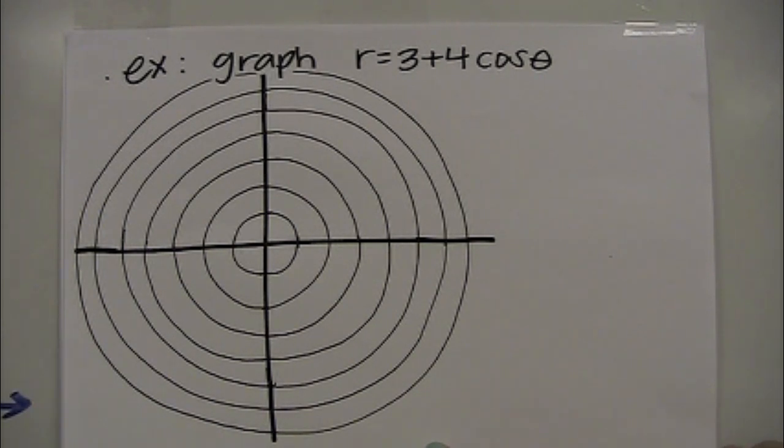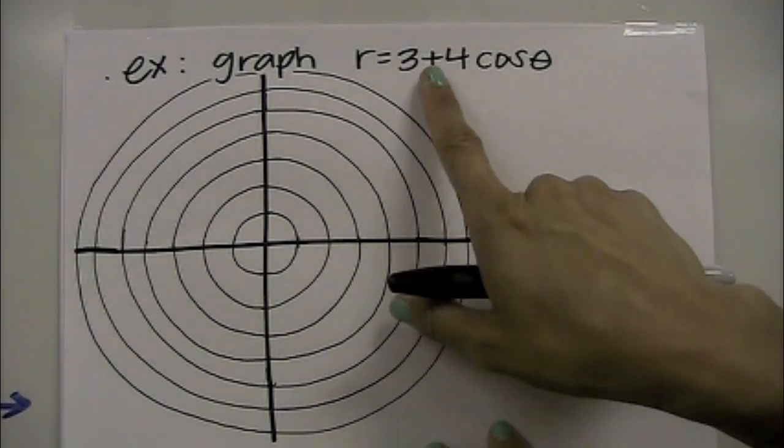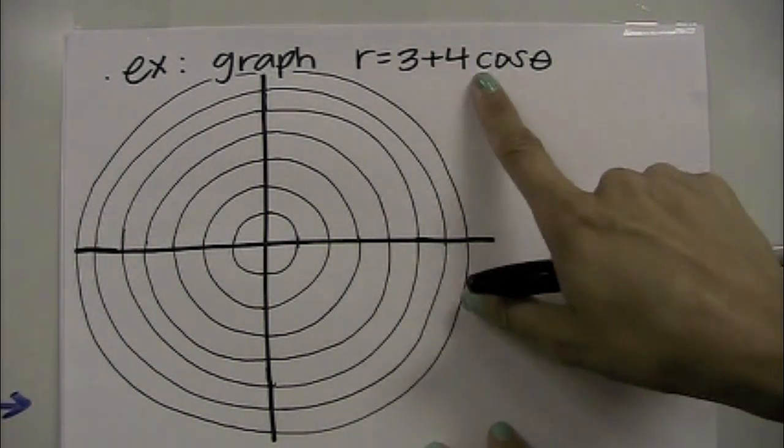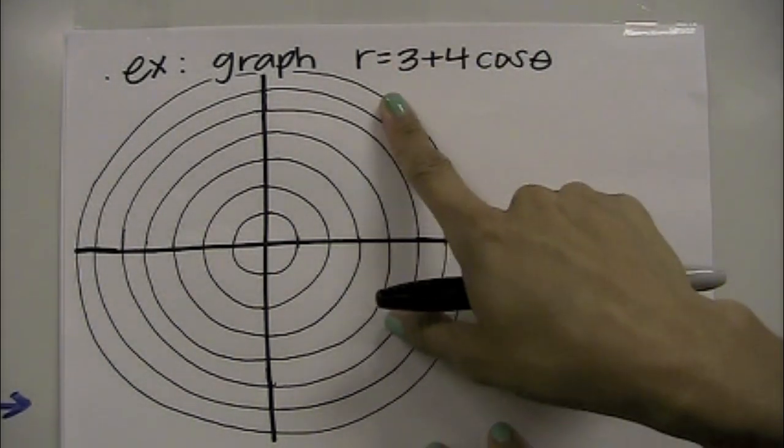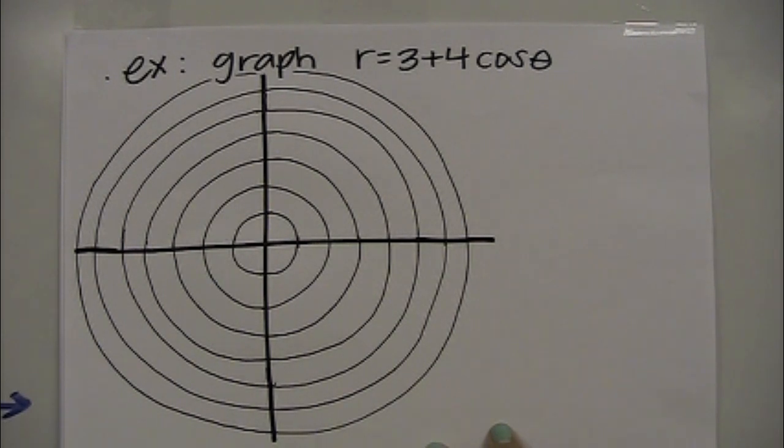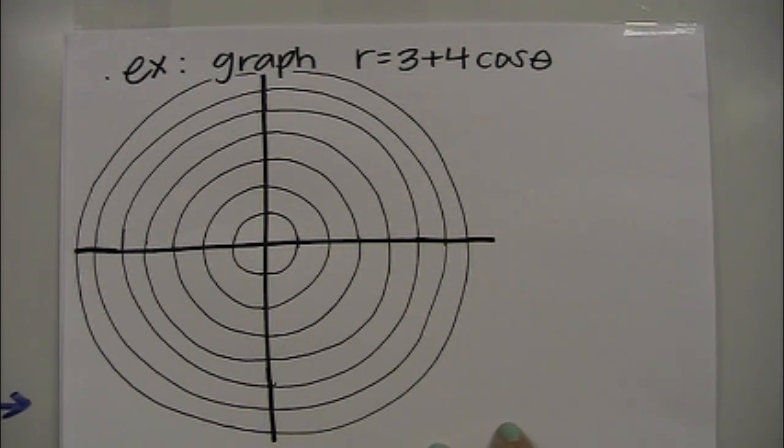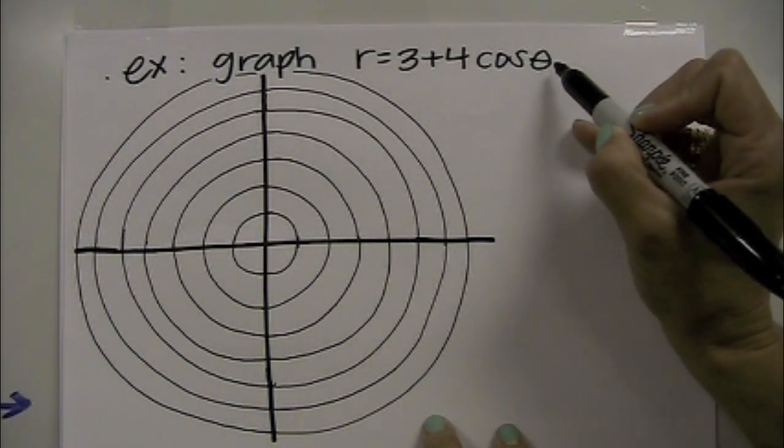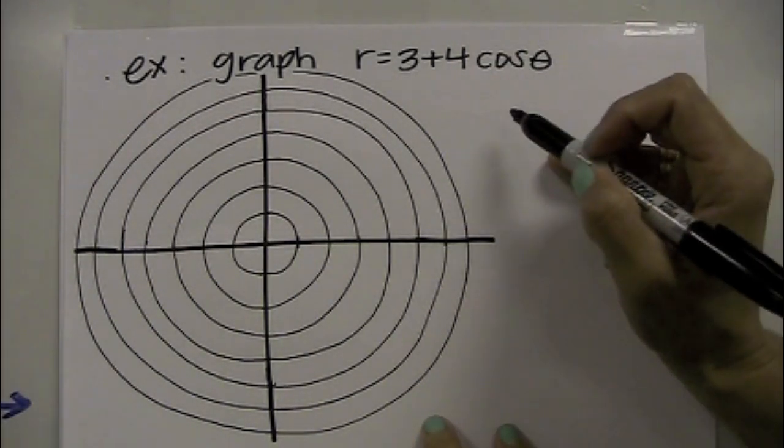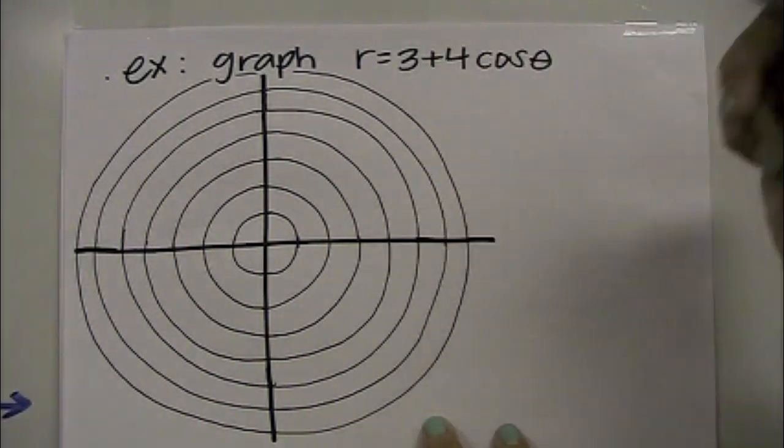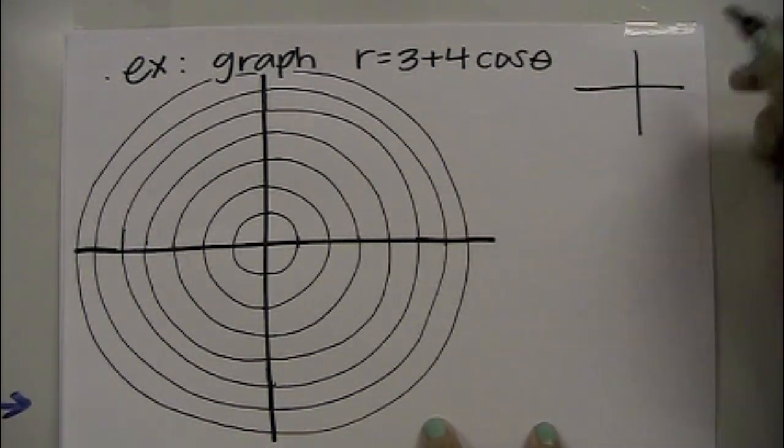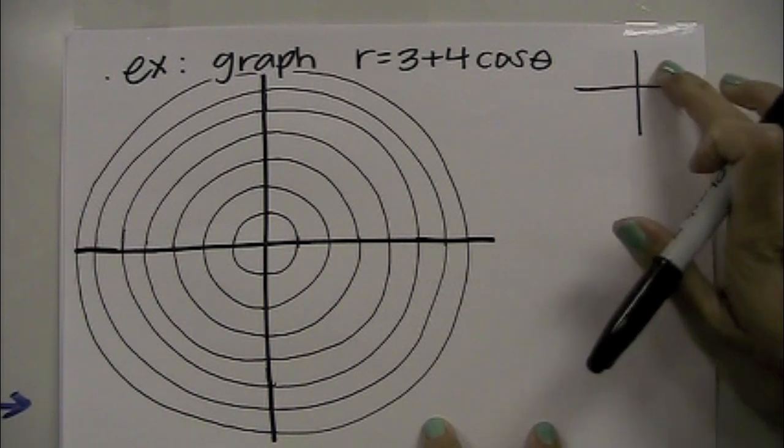In this example, we're going to graph the polar equation r equals 3 plus 4 cosine theta. Because you have a plus, and it's cosine of theta, we know that it's going to be a limaçon. First thing I want to identify is that because it's cosine, I know it's going to fall along the x-axis. Because it's a positive, I know that the graph will be on the right side.